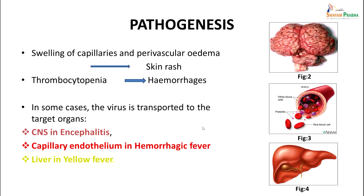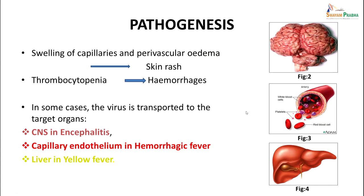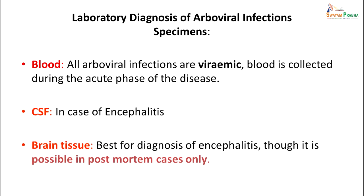When there is swelling of capillaries and perivascular edema, that is what is responsible for the skin rash. Thrombocytopenia occurs, which leads to hemorrhages. In some cases the virus is transmitted to target organs — if transmitted to the CNS, it may cause encephalitis; to capillary endothelium, it may cause hemorrhagic fever; or it may go to the liver to cause yellow fever. This is how viruses cause viral fevers along with rashes or arthralgia.